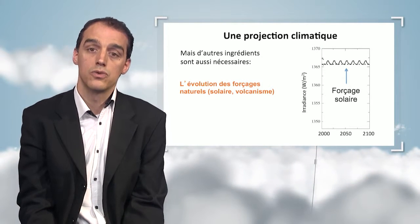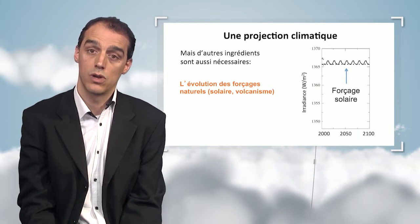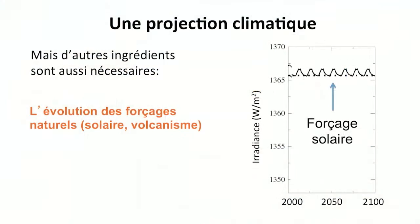Scientists also use an indication on the evolution of natural forcing — for instance, solar forcing. What is the variation in the intensity of solar rays and volcanic forcing? In the absence of accurate indications, we can use the 11-year evolution cycle for solar forcing.